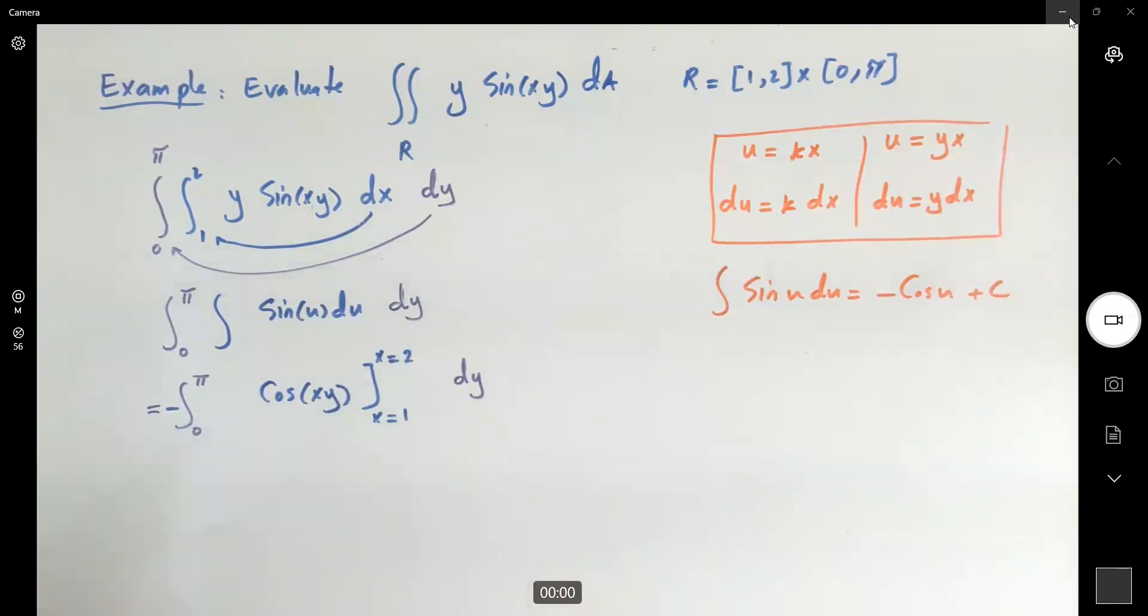Let's plug in x, and then see what do we have. Here we get negative 0 to pi. So here you have the cosine of 2y, minus cosine of y, and then dy.